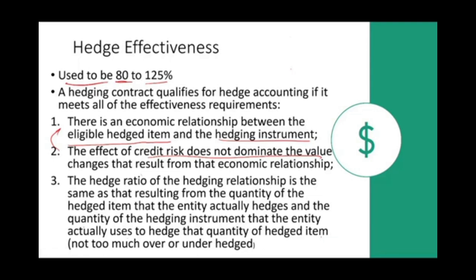Third, the hedge ratio of the hedging relationship must equal the ratio resulting from the actual quantity hedged and the quantity of the hedging instrument used. Simply put, you should not be over-hedging or under-hedging. If you have one million dollars of exposure but you buy a 1.5 million dollar hedge, you're over-hedging and starting to speculate. Conversely, if you only hedge $600,000 of a million-dollar exposure, you're under-hedging. The ratio must be equal. If you're over-hedged or under-hedged, the hedge is not effective.